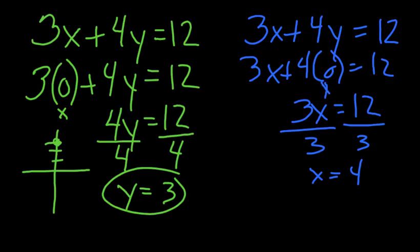Because remember, this is y. It's a terrible-looking y. Anyway, (4, 0). So on the x-axis, 1, 2, 3, 4, 0, there's the point. Connect the dots. There's your line. Let's try another one.